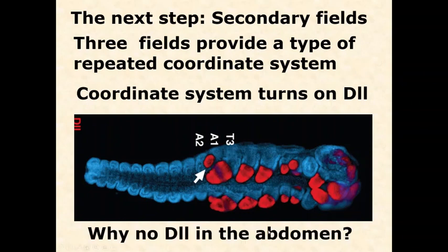This is just a quick review. Why don't we see distalless expression, no red at all in most of the abdomen? There's that one little exception, abdominal one. Remember, this is because UBX and abdominal A together repress distalless.